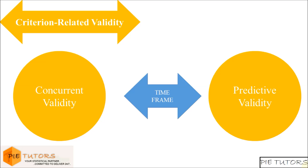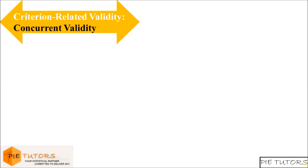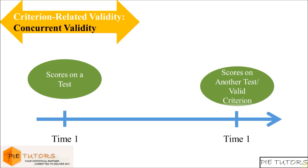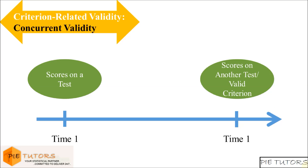Let us first look at concurrent validity. Concurrent validity is the degree to which the scores on a task are related to the scores on another already established test administered at the same time, or to some other valid criteria available at the same time.